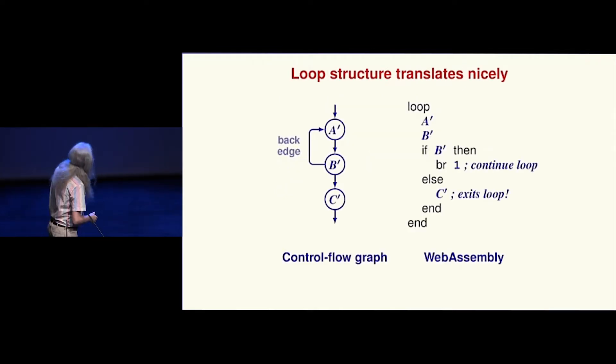It works for nice simple if-then forms. Here's about the simplest loop I could write. We're going to enter A′, B′ could go back to A′, and then eventually we'll exit the loop. Here's what the WebAssembly looks like. If your B′ wants to go back, it's going to use this br instruction which acts like a continue.